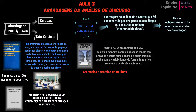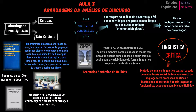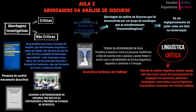Fairclough destaca que essa abordagem é insuficientemente desenvolvida em sua orientação social para o discurso. Há, em sua análise de discurso, uma ênfase individualista parcial sobre as estratégias retóricas dos falantes. Fairclough agora inicia a abordagem da linguística crítica. A linguística crítica foi uma abordagem desenvolvida por um grupo da Universidade de East Anglia na década de 1970. Eles tentaram casar um método de análise linguística textual com uma teoria social do funcionamento da linguagem em processos políticos e ideológicos, recorrendo à teoria linguística funcionalista associada com Michael Halliday e conhecida como linguística sistêmica.